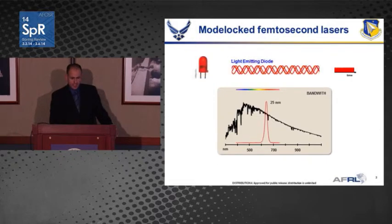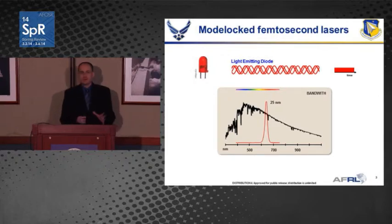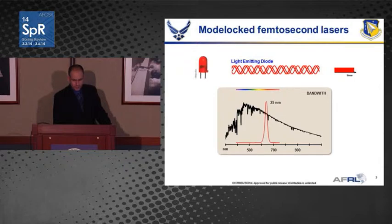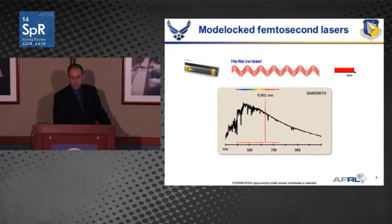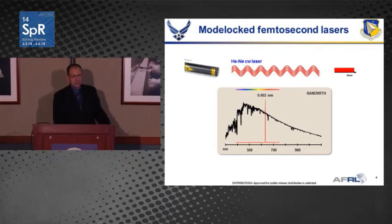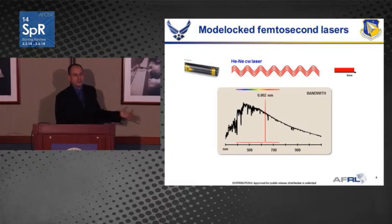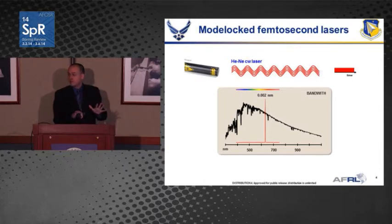If I now look at a light-emitting diode — a red LED — the bandwidth is significantly smaller, about 40 times smaller than the sun. Still incoherent, meaning the crests still don't line up, but now I have a less noisy average power on my detector. If I look at a traditional laser, such as a helium-neon laser, the bandwidth is now about 10,000 times shorter than the LED. Because of the lasing process itself, it's very coherent — all the crests and troughs line up.